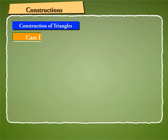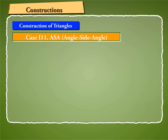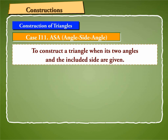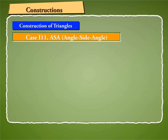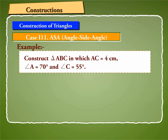Case 3: ASA Angle-Side-Angle Triangle Construction. To construct a triangle when its two angles and the included side are given. To understand this, let us take an example. Let us construct triangle ABC in which AC is equal to 4 cm, angle A is equal to 70 degrees, and angle C is equal to 55 degrees.